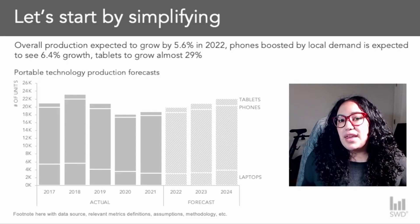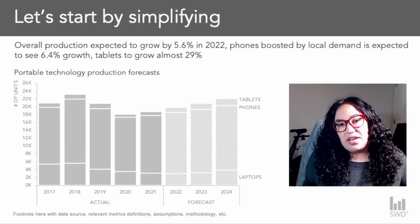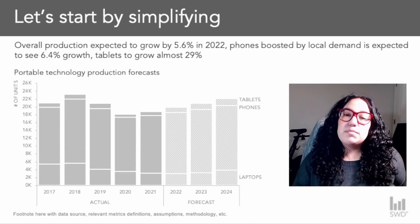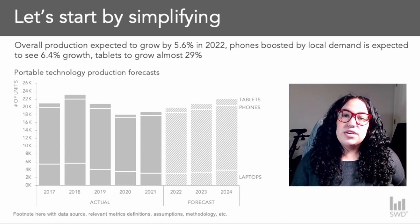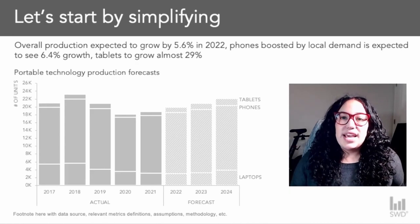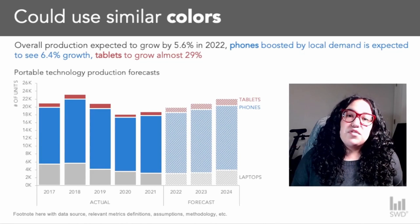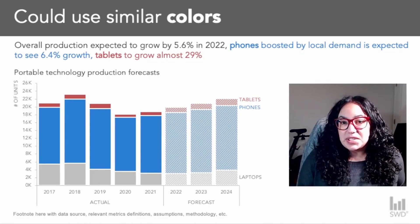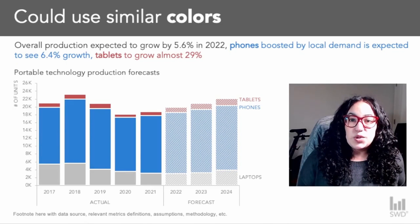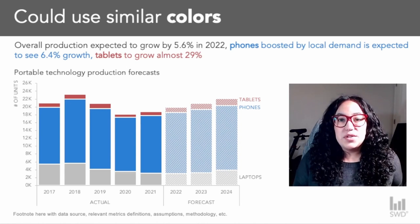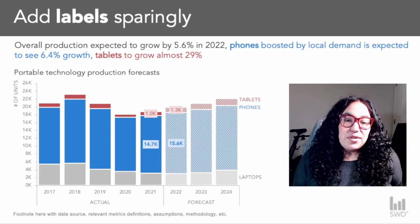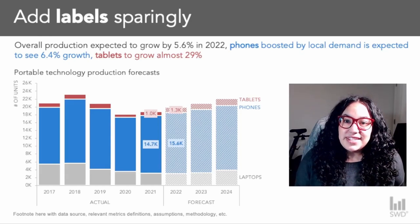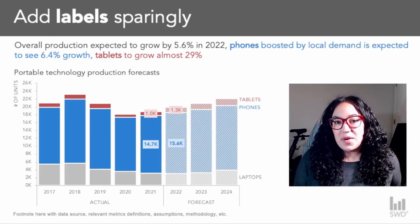The first change I might make is to add color in, and to do so sparingly. I'm going to make use of that blue and red we saw in the original, and just use it to emphasize the devices being called out in the takeaway at the top. Next, I can further draw your attention to the data that is most important — that difference between 2021 and 2022 — by adding sparing data labels. Notice how your eyes are now drawn to the specific data that supports the takeaway at the top.